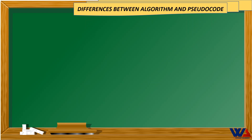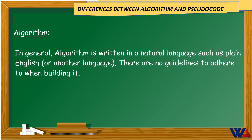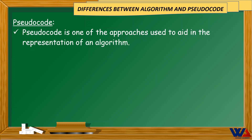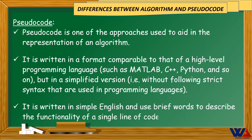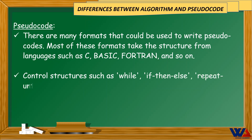Differences between algorithm and pseudocode: An algorithm is written in a natural language such as plain English, with no strict guidelines to adhere to. Pseudocode is one of the approaches used to represent an algorithm, written in a format comparable to a high-level programming language such as MATLAB, C++, or Python, but in a simplified version without strict syntax. It uses brief words to describe functionality, and many formats take structure from languages such as C, BASIC, and FORTRAN. Control structures such as WHILE, IF THEN ELSE, and REPEAT UNTIL can be used. Pseudocode is not actually a programming language and cannot be executed on a computer.